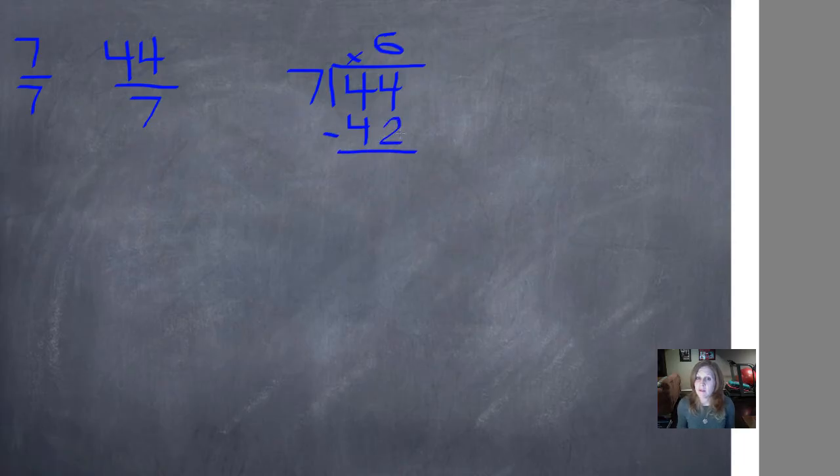2 is our remainder. Now when we're writing this as a mixed number, 6 is our whole number. We don't change that, that stays a whole number. But 2 is a remainder. It's a part of a whole, so we're going to write it as our new numerator.